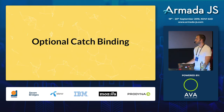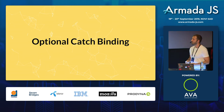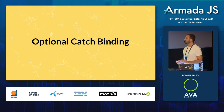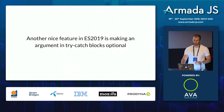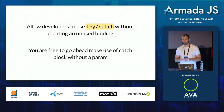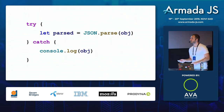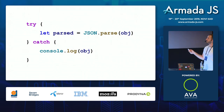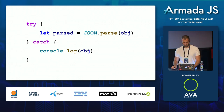The next thing in ECMAScript 2019 is optional catch binding - making the error argument in catch blocks optional. Since we now write a lot of try-catch blocks because of async/await syntax, if we don't want to use the error argument in catch, or we already know what's being thrown, we can use catch without a parameter.